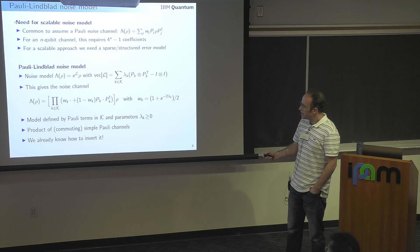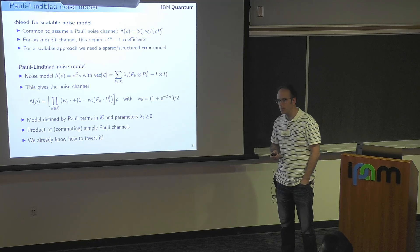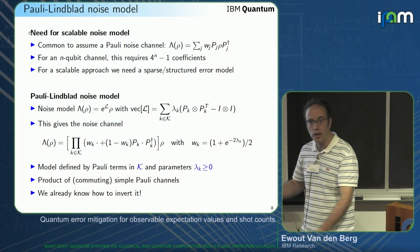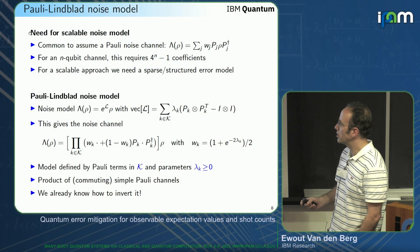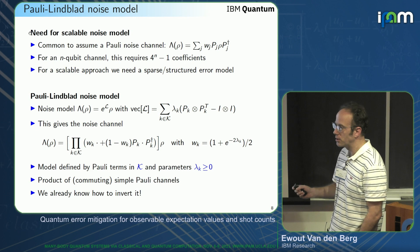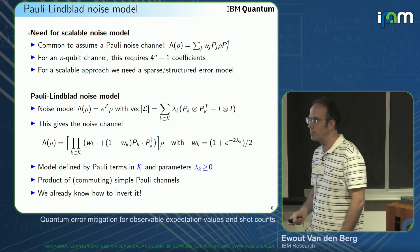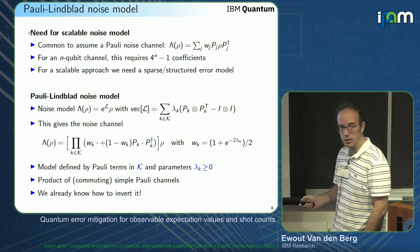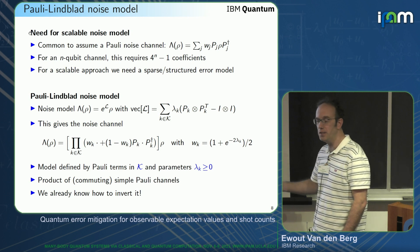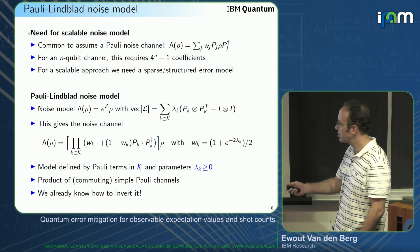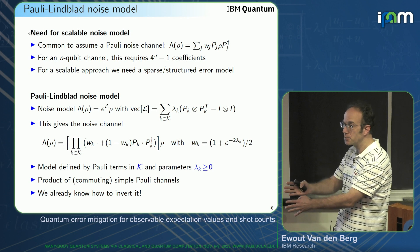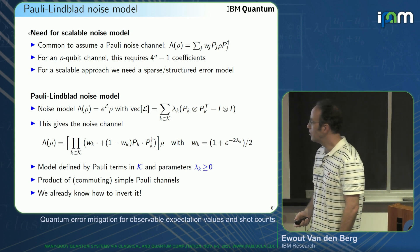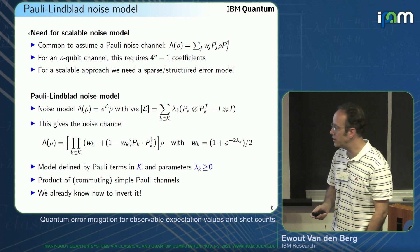This is a product of commuting simple Pauli channels, so it doesn't matter which order you apply them. We already saw how to invert a single channel, so you just invert each one with the sampling procedure seen earlier. You apply some Pauli to invert each one, stack them all together, and get one single Pauli to apply, which is easy to calculate.